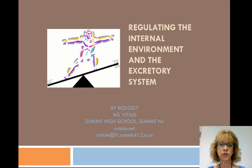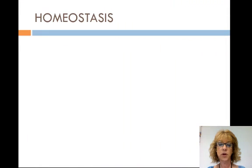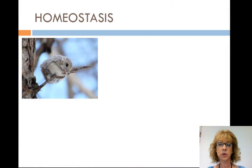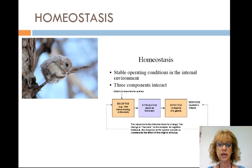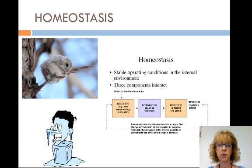One of the most remarkable characteristics of animals is that they can maintain physiologically favorable internal conditions, even as external conditions undergo dramatic shifts that would be lethal to individual cells. Homeostasis is the ability of animals to regulate their internal environment — for example, maintaining a body temperature when the external environment changes substantially. If a human's body temperature goes up or down a few degrees Celsius, they could die.